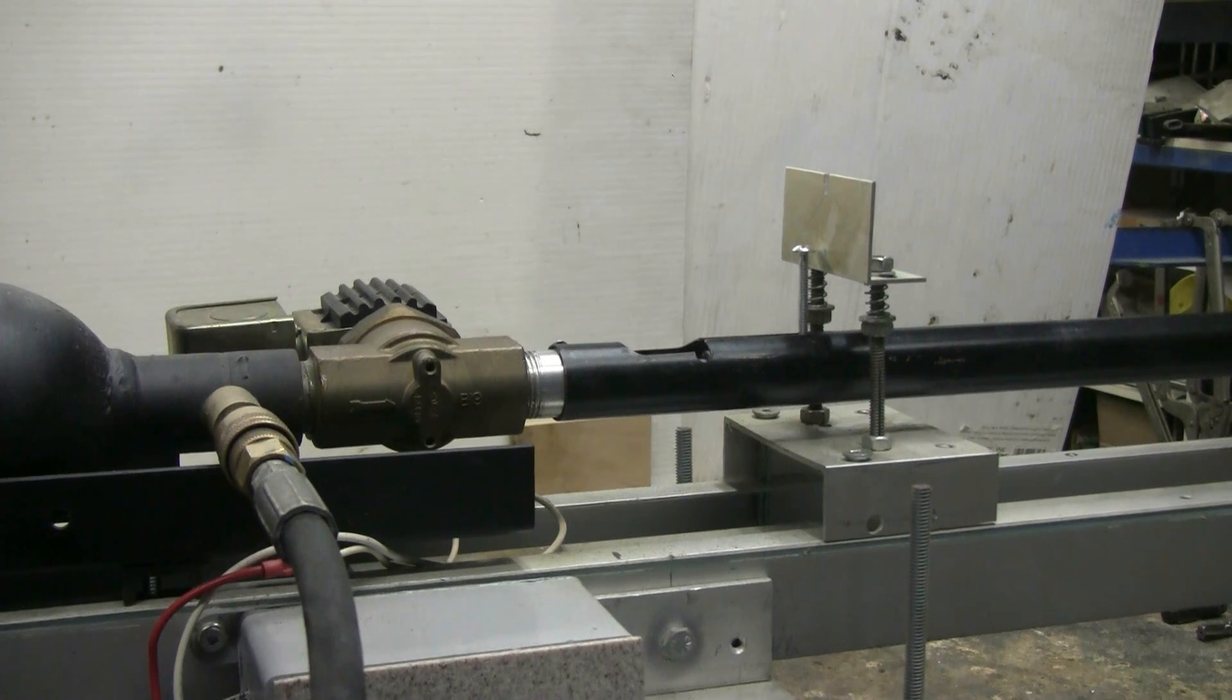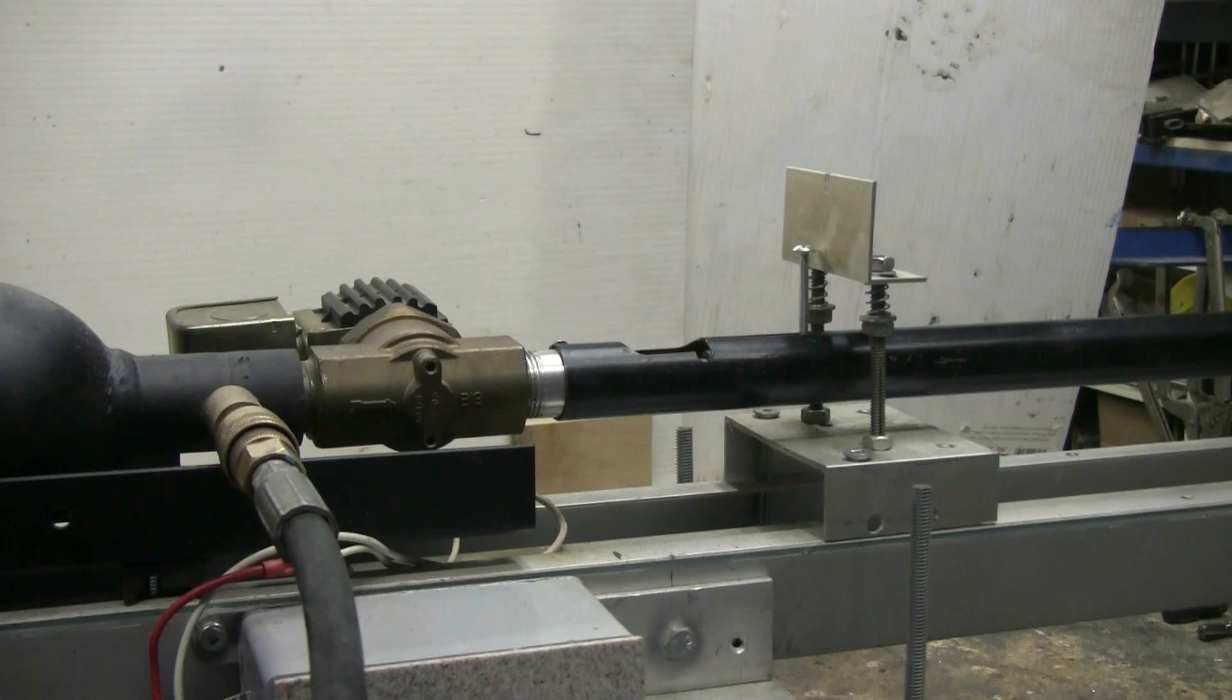This is my fire extinguisher tank and solenoid valve air cannon that I usually show in the air cannon videos. Today I took my caliber 410 aluminum barrel and I've rifled it with a rifling reamer I made.